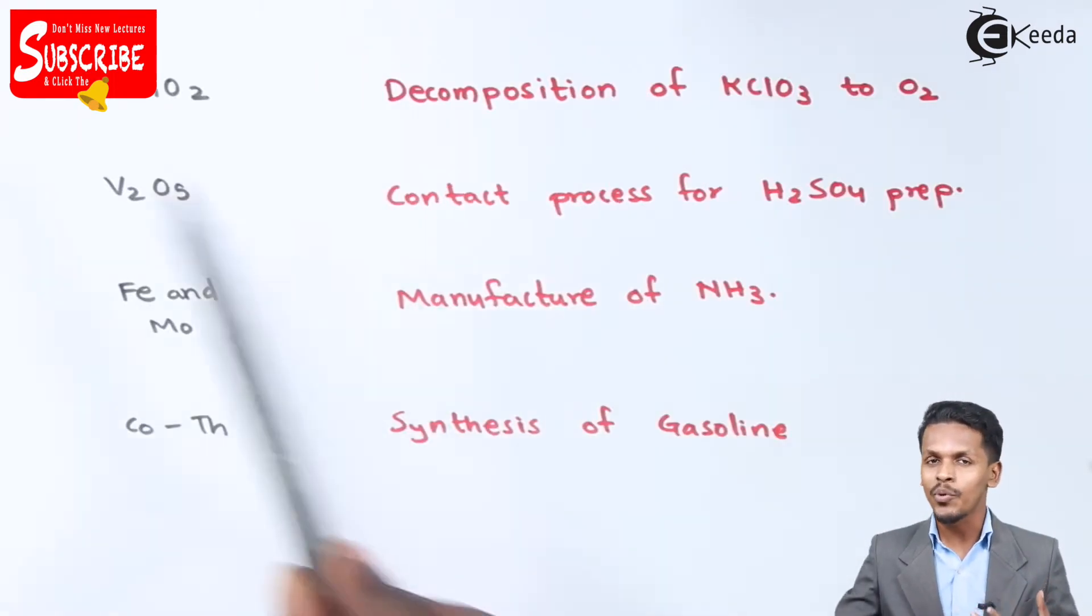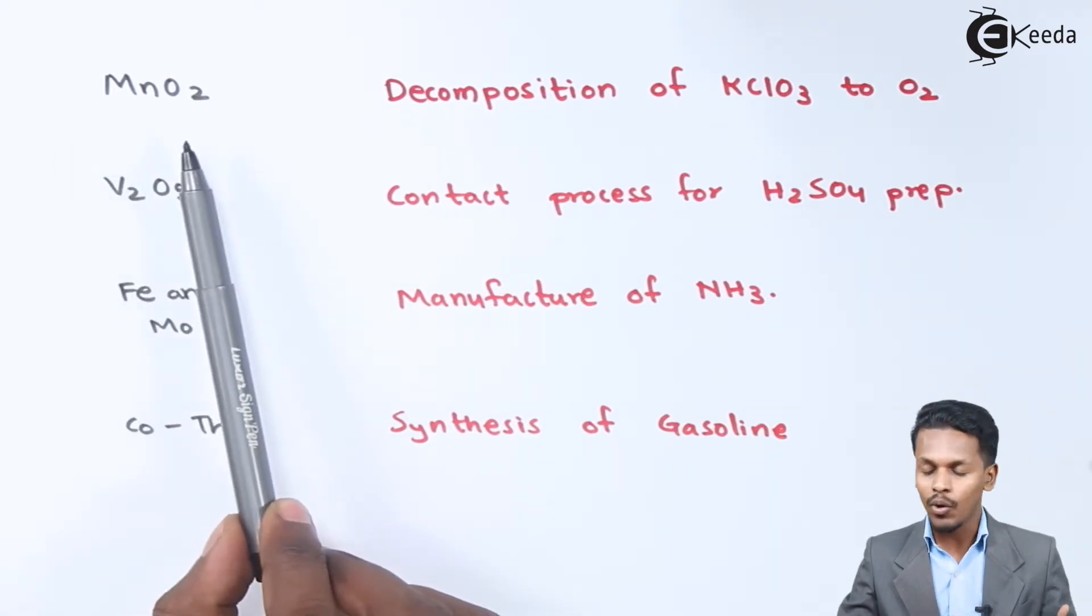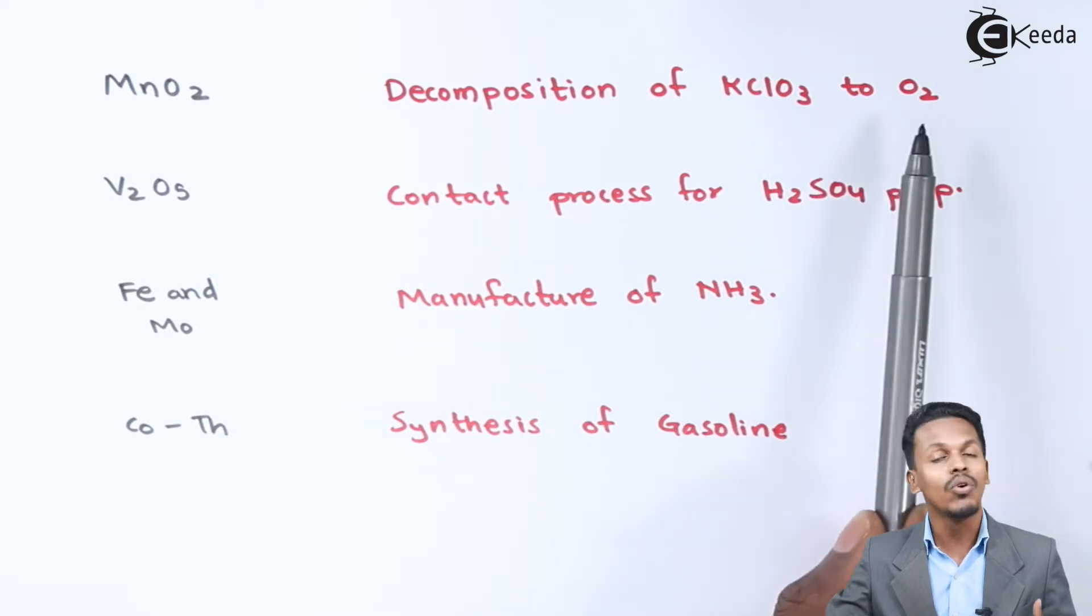Here are a few examples. MnO2, manganese dioxide, is used as a catalyst for the decomposition of KClO3 to O2.